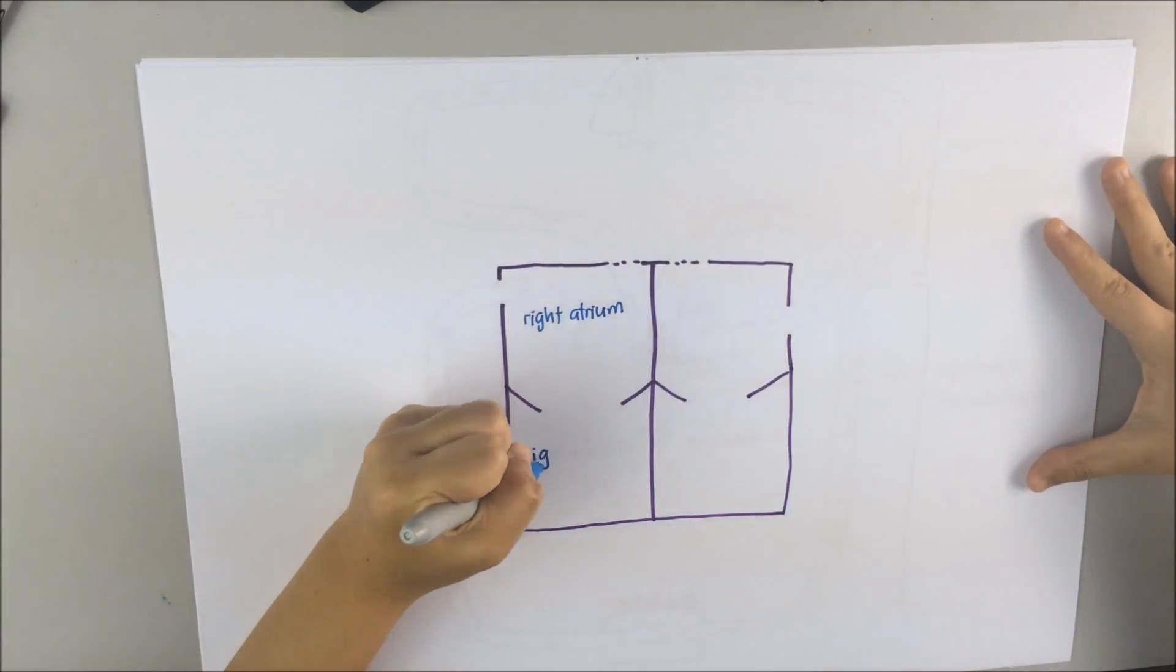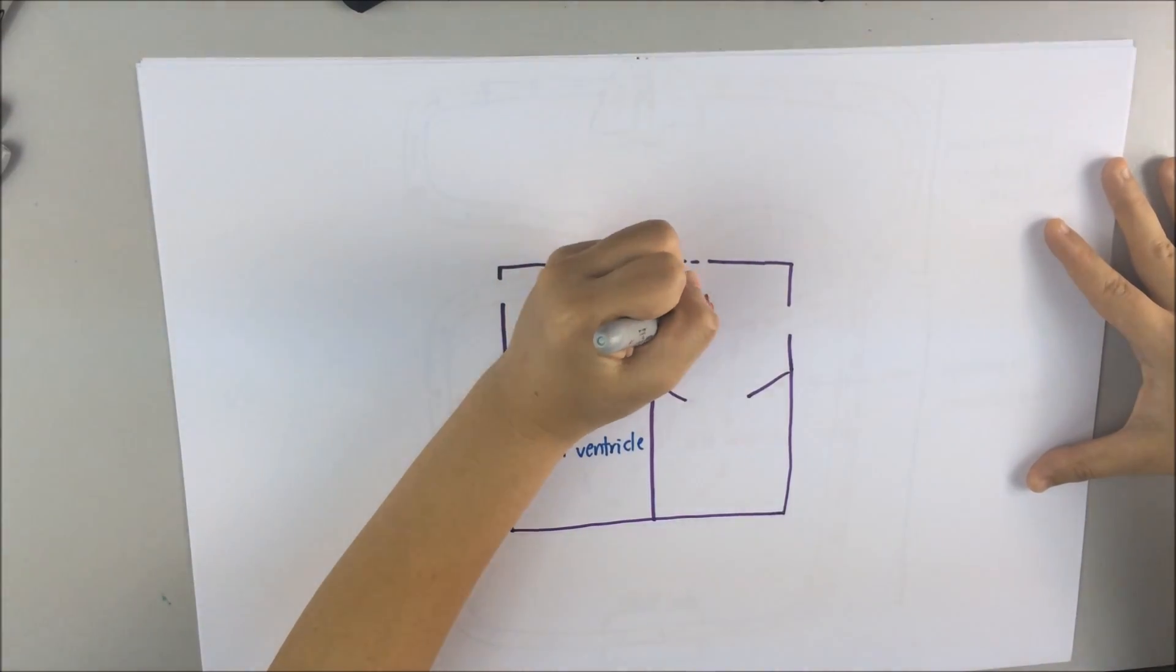There are four chambers of heart, namely, right atrium, right ventricle, left atrium, left ventricle.